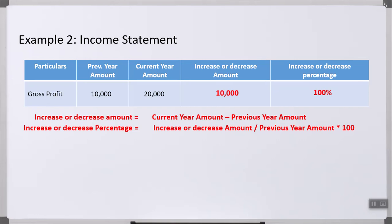This type of analysis — increase or decrease amount and percentage — you have to do for each and every item of the balance sheet and income statement. This will give you an overall picture of what is happening in the company: what profits are increasing, what is happening with the financial position. I hope this video was helpful. If you like this video, please share it with your friends. Thank you.